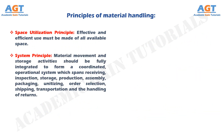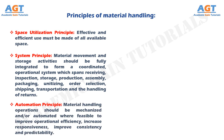The system principle: material movement and storage activities should be fully integrated to form a coordinated operational system which spans receiving, inspection, storage, production, assembly, packaging, unitizing, order selection, shipping, transportation and the handling of returns. The automation principle: material handling operations should be mechanized and/or automated where feasible to improve operational efficiency, increase responsiveness, and improve consistency and predictability.